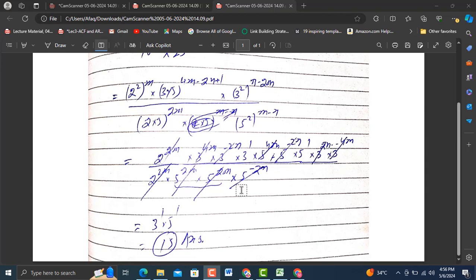After cancellation we have only 3 raised power 1 and 5 raised power 1, which equals 15. This is the answer of this short question, this is the simplified form of this question.